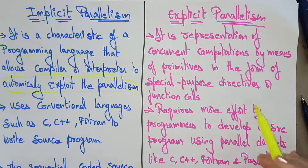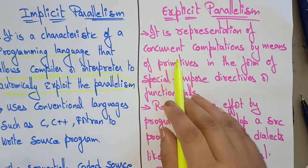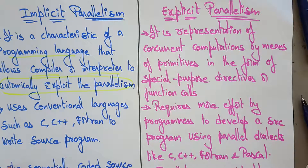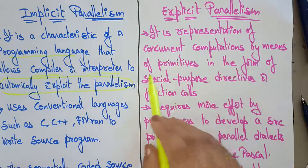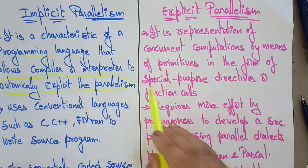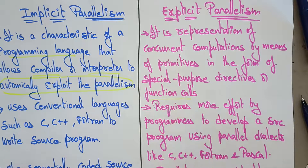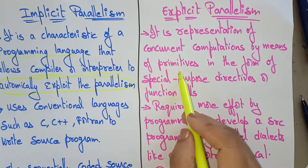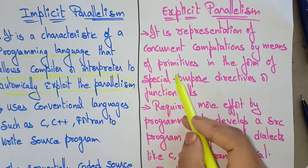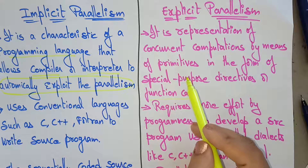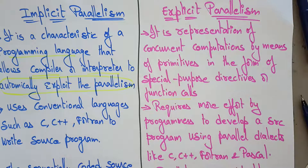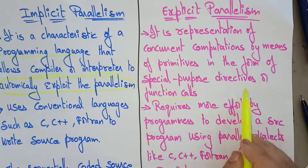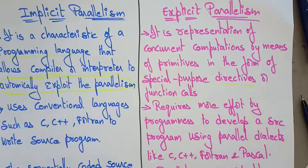Now coming to explicit parallelism. It is a representation of concurrent computations by means of primitives in the form of special purpose directives or function calls. Here you are supposed to write special primitives relating to process synchronization, communications, or task partitioning — those are called primitives, in the form of special purpose directives or function calls.